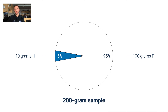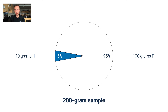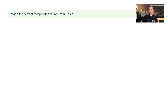Percent composition is useful to chemists because often we want to figure out what the formula for something is. Knowing the percentage breakdown of each element, we can actually figure out what the formula for a substance is, and if we know the formula we know what the substance is. First let's nail down the concept of percent composition, and then in the next video I'll show you how it's useful.